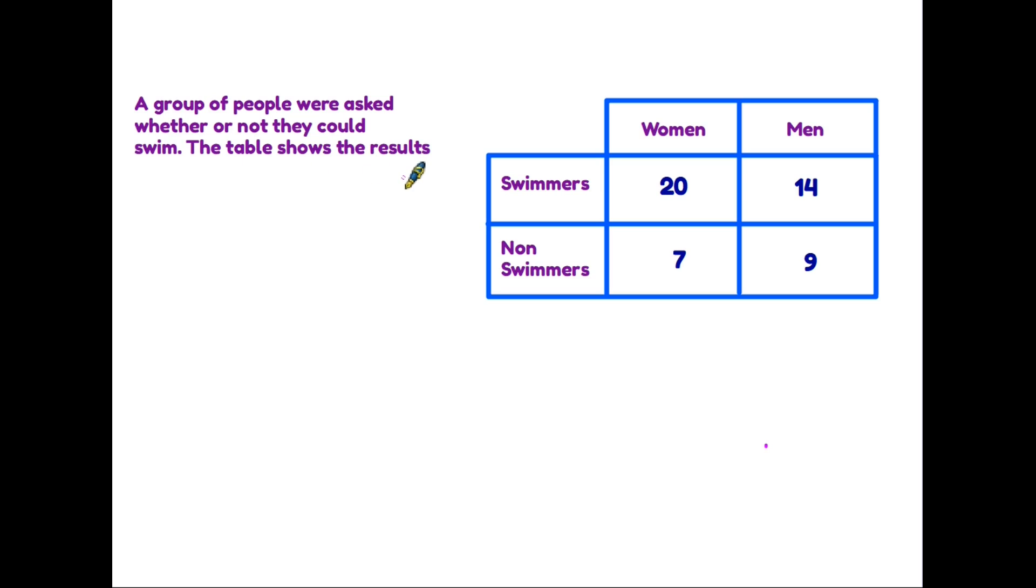So let's have a look at the table on the right here. Sometimes we hear these called two-way tables simply because there is information or data in two different directions. So across the top here we have information about women and men and down the side swimmers and non-swimmers.